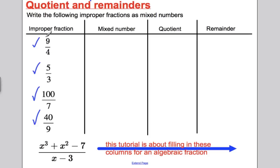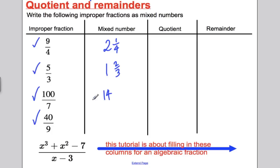How many times does 4 go into 9, whole times? Well, 2, and you've got 1 left — so 1 out of 4, a quarter left. How many times does 3 go into 5? Only once, and it's got 2 left — 2 thirds left. How many times does 7 go into 100? 14, because 14 times 7 is 98, and you must have 2 left — 2 out of 7. And lastly, how many times does 9 go into 40? It goes in 4 whole times, and you'll be left with 4 out of 9. So this column is mixed numbers.